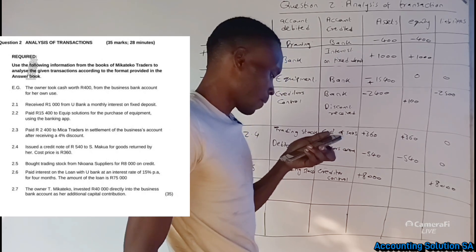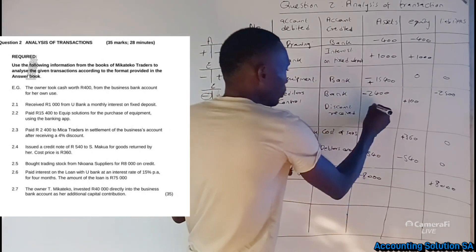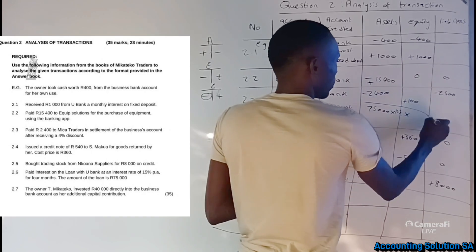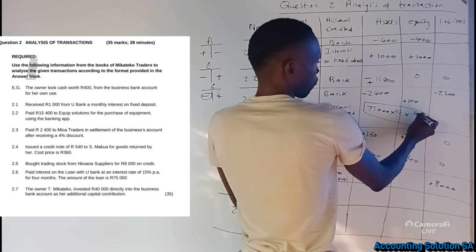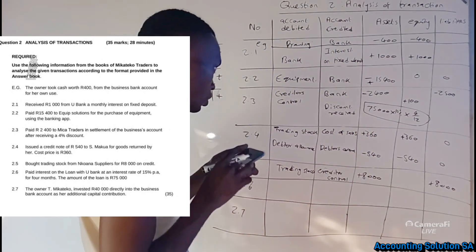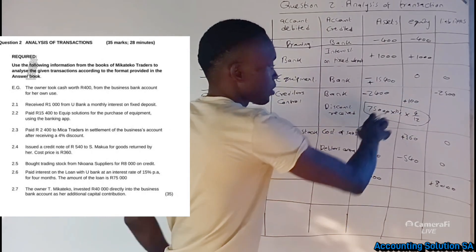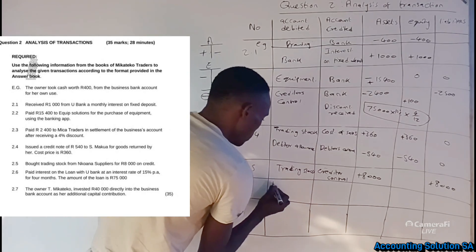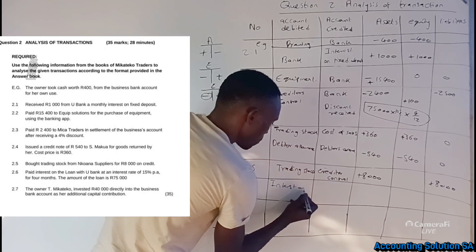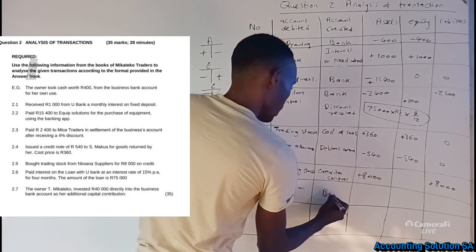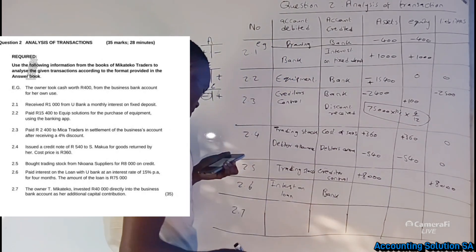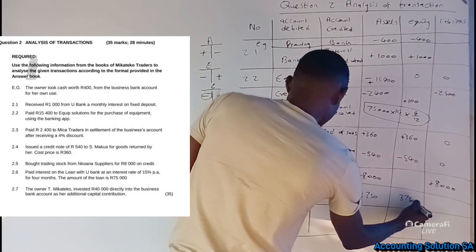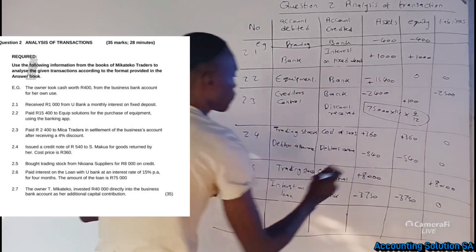Transaction 2.6: paid interest on a loan at 15% per year for four months; the loan amount is R75,000. Calculation: R75,000 × 15% × (4/12) = R3,750. Interest on Loan is an expense and must be debited. Bank decreases because we are paying the interest.